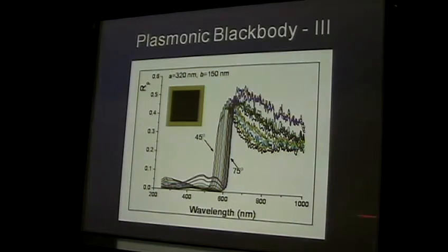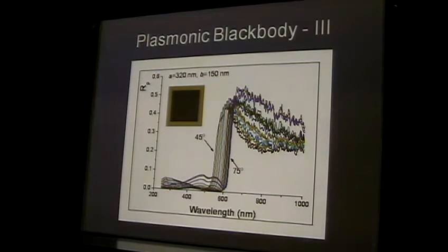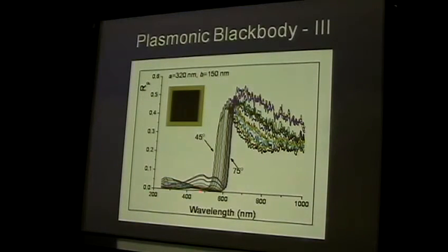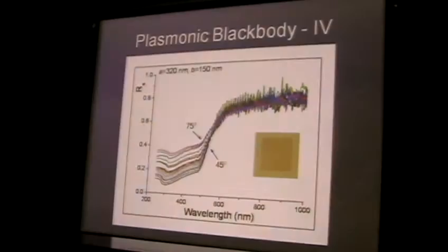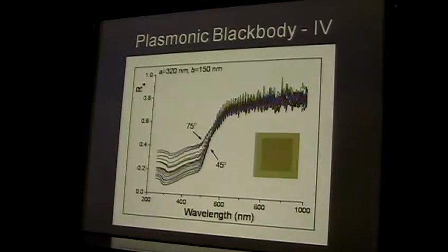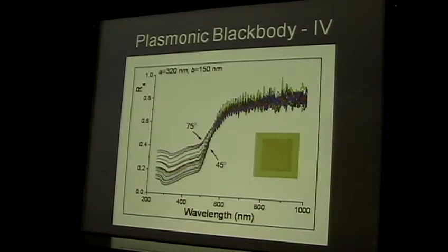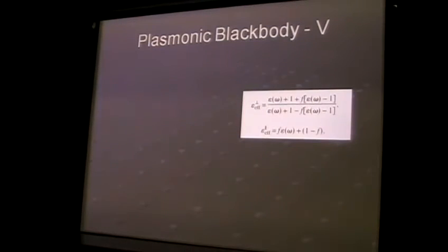If you measure the reflection spectrum at angles from 45 to 75 degrees, at normal incidence you can see it reflects about 5% of the light over the whole visible spectrum for one polarization. For the other polarization it behaves more or less like gold, reflecting 80%. So from zero to 75 degrees for TM polarization, the structure absorbs almost all light that falls on it. You can write theory about this by calculating effective constants using effective medium approximations, arriving at effective N and K for the parallel component, which gives a pretty good description.